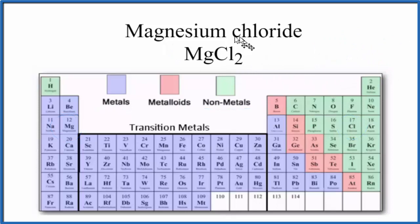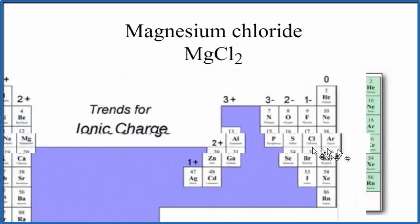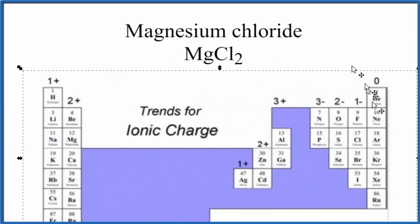You might ask why we have two chlorine atoms and only one magnesium. Because this is an ionic compound, we need to look at ionic charge. So on the periodic table, for the groups, they have the ionic charges listed.